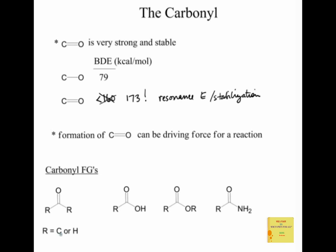We call it a ketone when the R group on either side of the carbonyl is a carbon. When we have at least one hydrogen attached — two hydrogens or one carbon and a hydrogen — that's what we call an aldehyde. Today's lesson starts with carbonyls that have nothing other than carbons or hydrogens attached.